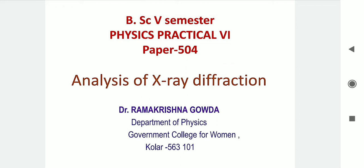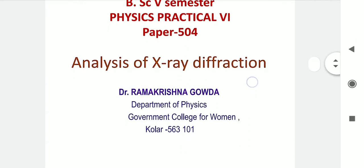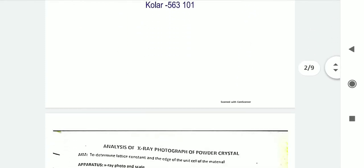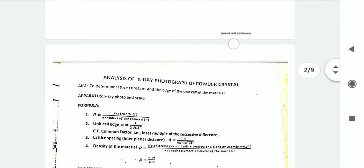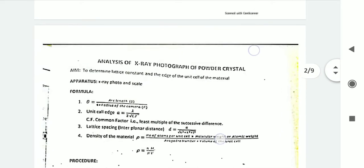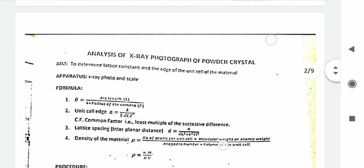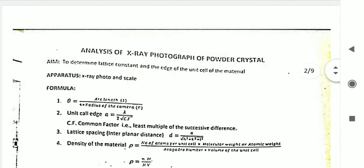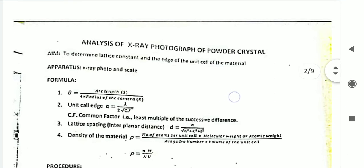It is also known as Analysis of X-ray Powder Diffraction. Already we have shared the manual as well as the data sheet. The aim of the experiment is to determine the lattice constant and hence the edge of the unit cell of the material. The apparatus required are: X-ray photo and scale.